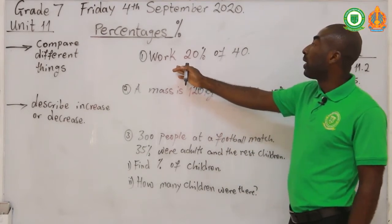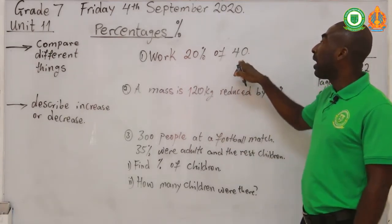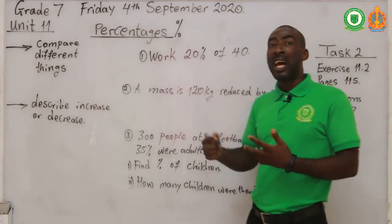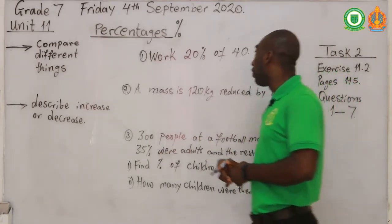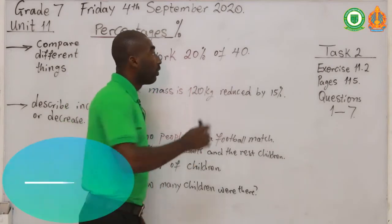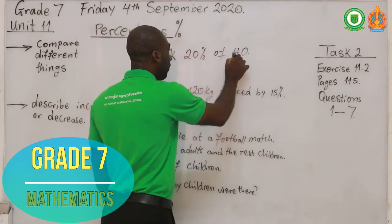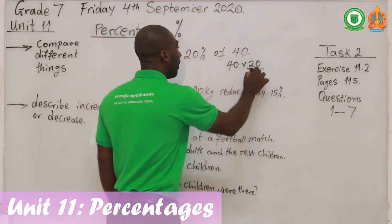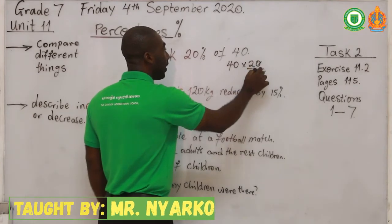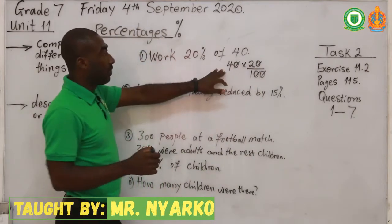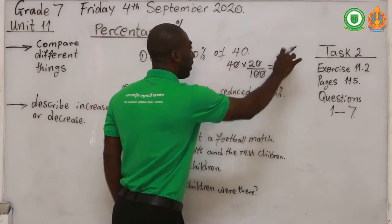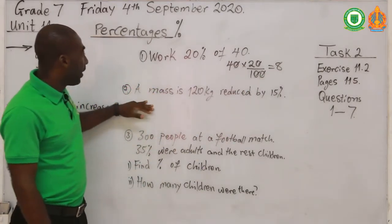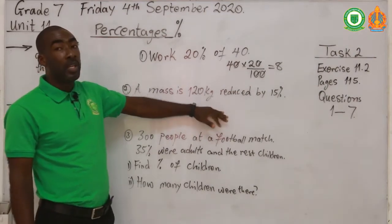The first example: we're going to work out 20% of 40. That means we are looking for what the value of 20% is within 40 — we see 40 as 100. So we write 40 multiplied by 20 over 100. Zeros cancel, leaving 4 and 2, which gives us 8. So 20% of 40 is equal to 8.